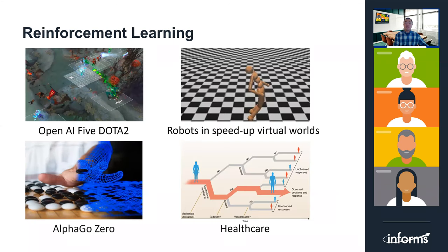To motivate the stochastic approximation algorithm, we will first introduce the reinforcement learning problem. Reinforcement learning is used widely in real-world problems. For example, OpenAI5 for computer games Defense of the Ancients, AlphaGo Zero for the game of Go, robots in virtual worlds, and healthcare, etc.